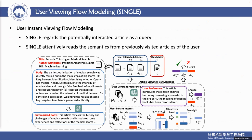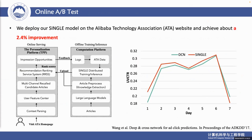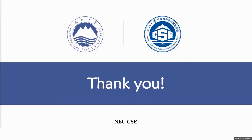Finally, to model the user's instant viewing behavior, we regard the potentially interacted article as a query and attentively read the representations of previously clicked articles to model the user behavior. Our experiments show the effectiveness of our model by deploying it on an online website, achieving about a 2.4 percentage point improvement in the online test. That's all. Thank you.